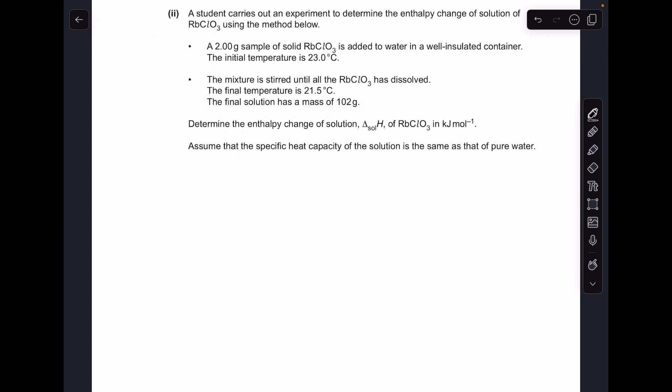Next part of the question switches to the other rubidium salt. So rubidium chlorate 5 this is. And we've got some information here to calculate the enthalpy change of solution. So the first thing we'll do is Q equals MC delta T. Just be careful, the M that we use is the mass of the solution, the 102 grams,